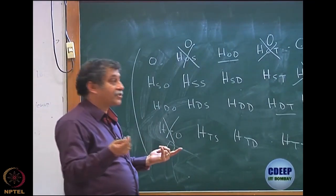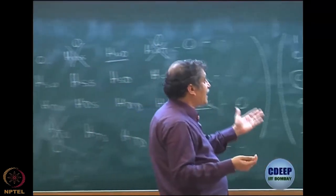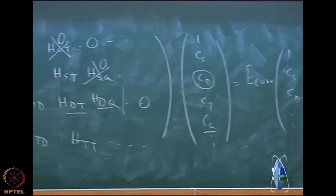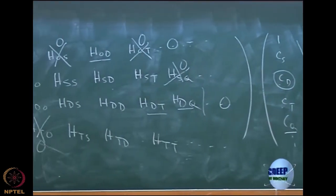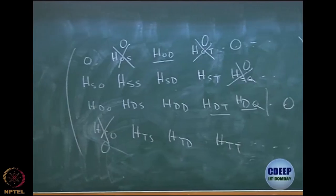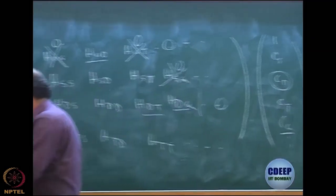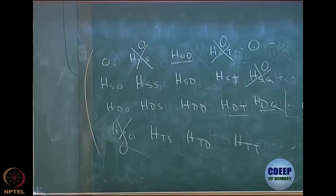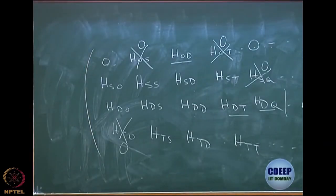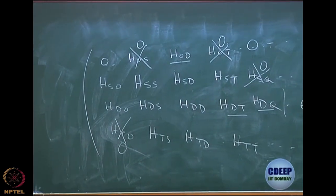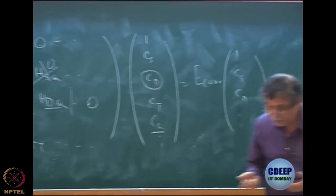That is the reason CISD and DCI or CID are giving different results - because the double amplitude changes. Not that the correlation energy directly depends on single amplitudes, but the double amplitude changes because of the effect of singles. You also saw the effect of full CI at different basis sets - as the basis set changes, things change. One of the important things is to look at ionization potential.